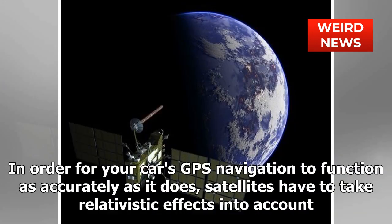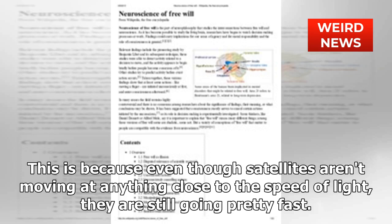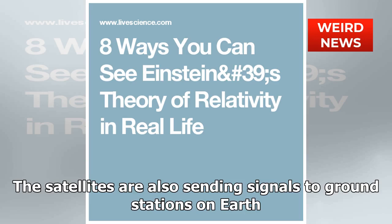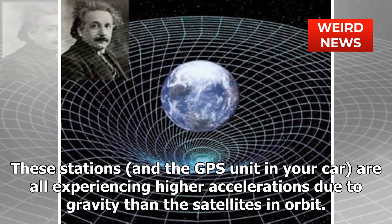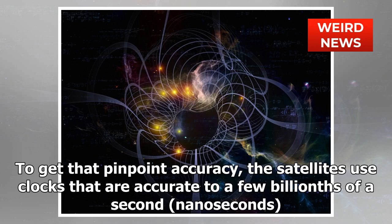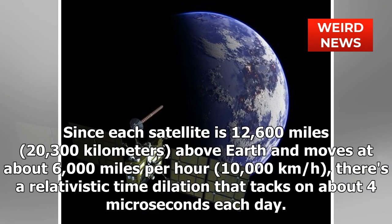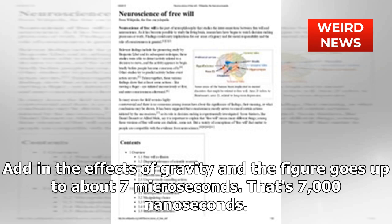In order for your car's GPS navigation to function as accurately as it does, satellites have to take relativistic effects into account. Even though satellites aren't moving at anything close to the speed of light, they are still going pretty fast, and they send signals to ground stations on Earth. Those stations and the GPS unit in your car are all experiencing higher accelerations due to gravity than the satellites in orbit. To get pinpoint accuracy, the satellites use clocks accurate to a few billionths of a second. Since each satellite is 12,600 miles (20,300 km) above Earth and moves at about 6,000 miles per hour (10,000 km/h), there is a relativistic time dilation that adds about four microseconds each day.